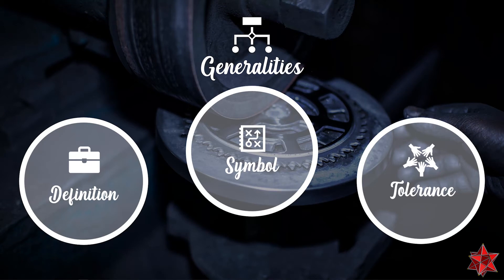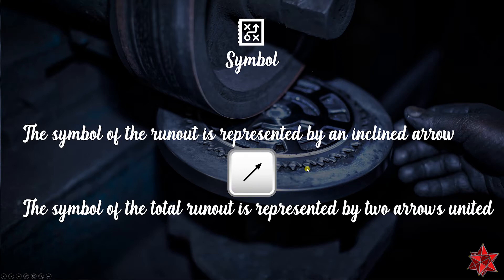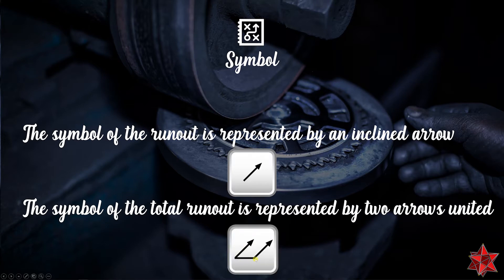Let's go to the symbol. The symbol of the runout is represented by a single inclined arrow, as we can see here. The symbol of the total runout is represented by two inclined arrows united, as we can see here. This is the way we can identify the total runout characteristic in the drawing.